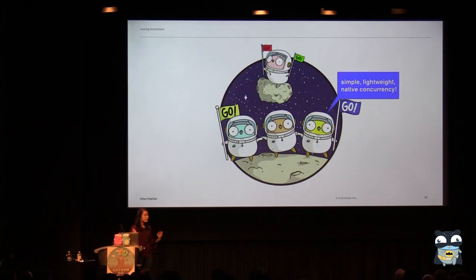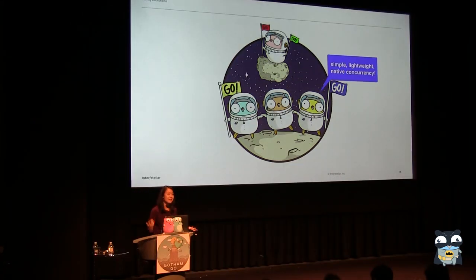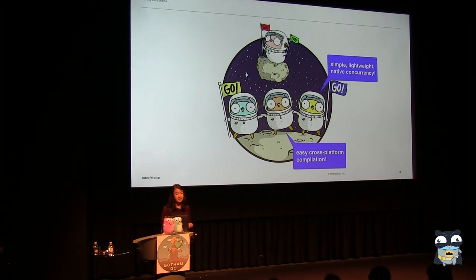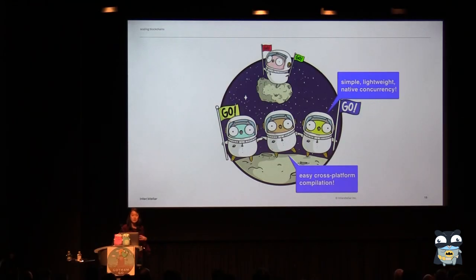We want to be able to spawn a lot of different Go routines to take care of work, clean them up really nicely, and communicate between them. And there's nothing better for that than Go. We also have really easy cross-platform compilation, so when we want to build lightweight nodes or software that can run on a variety of hardware devices, Go makes that super simple — we just build our Go project for whatever platform we want.